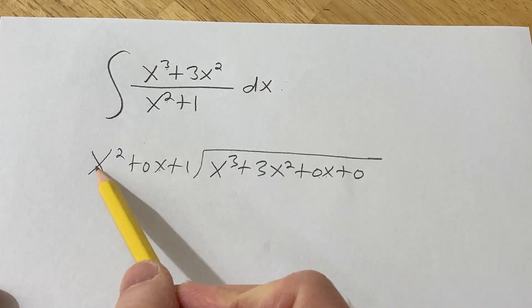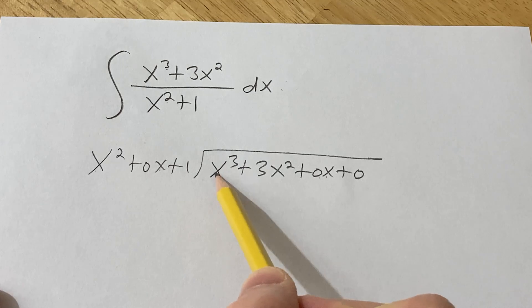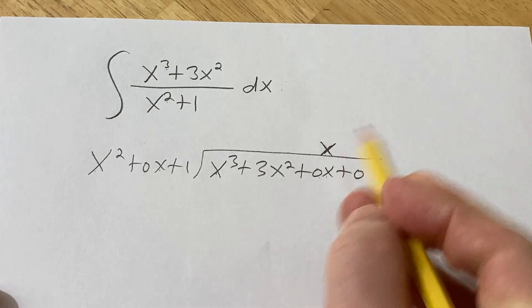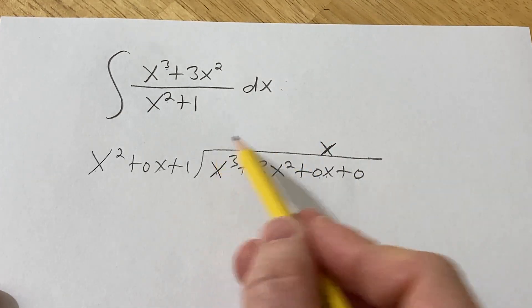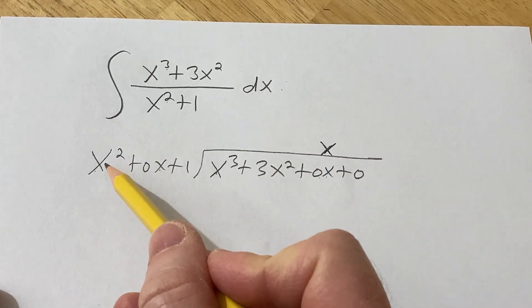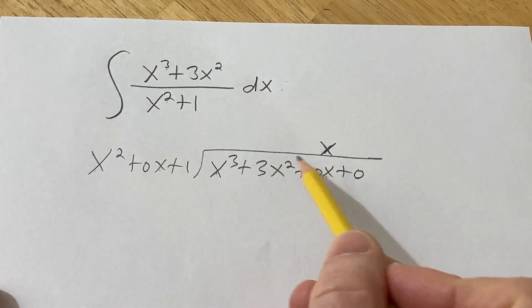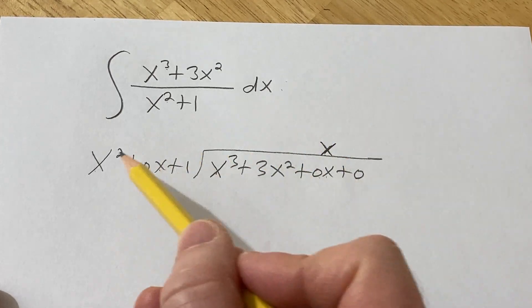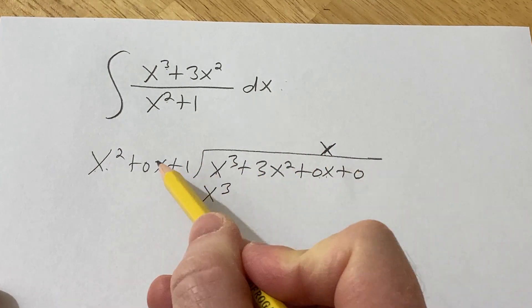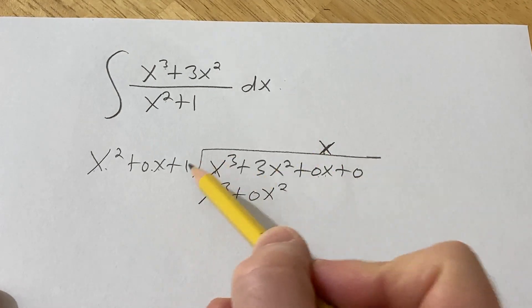So to start the process, you ask yourself, what do you multiply by x squared in order to get x cubed? Well, x. So then you write it above the placeholder. Then you perform the multiplication. x times x squared is x cubed. x times 0x is 0x squared. And then x times 1 is x.